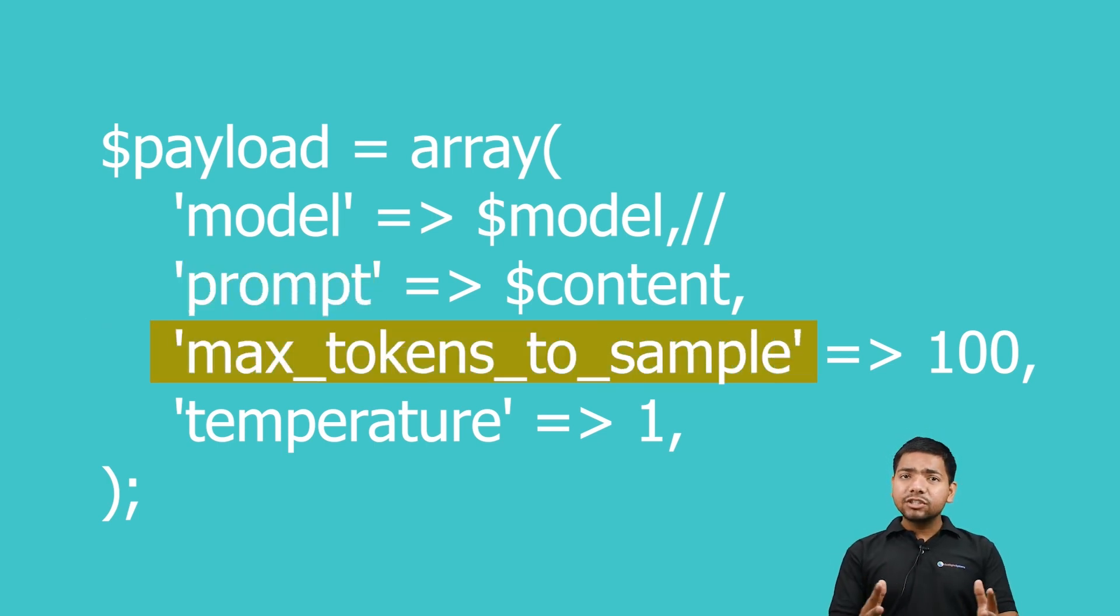The third component is max_tokens_to_sample. This line sets the max_tokens_to_sample key in the payload array to the value 100. This parameter specifies the maximum number of tokens—words or characters—that the API should generate in the completion. In this case, the API will generate text with a maximum length of 100 tokens.